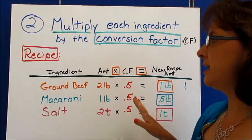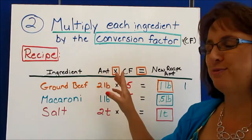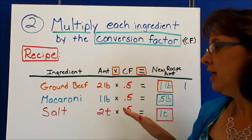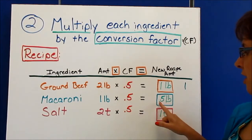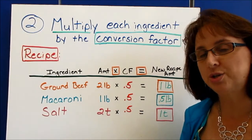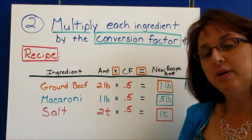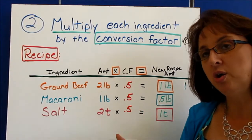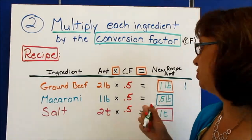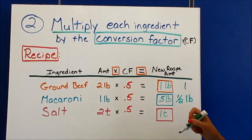Our third step — and I'm going to stay on this page for just a second — is to make them into logical measurable amounts. If we look here, 0.5 pounds: the only thing we need to do to make that logical and measurable is maybe translate our decimal into a fraction, and we know that the common decimal 0.5 translates to one half. So this would be one half of a pound.